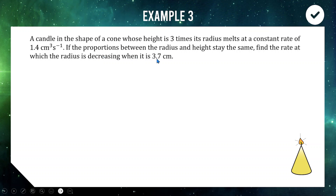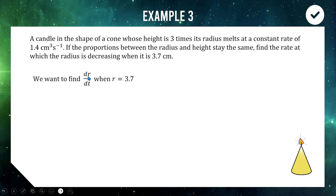First step: figure out what we're trying to find. We want to find dr/dt when the radius is 3.7. We recognise there's no relationship between r and t in the question, so we're going to have to chain it together. The extra variable here is volume, since the cone is melting at a rate of 1.4 cubic centimetres per second.